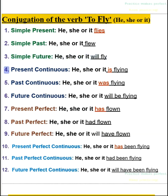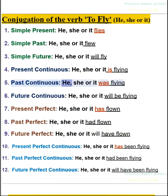4. Present continuous — he, she, or it is flying. 5. Past continuous — he, she, or it was flying. 6. Future continuous — he, she, or it will be flying.